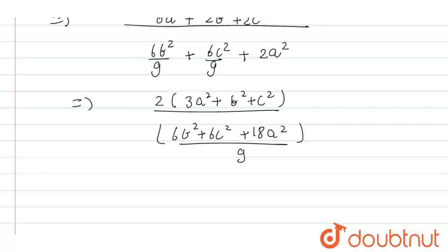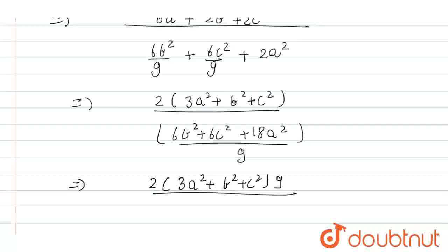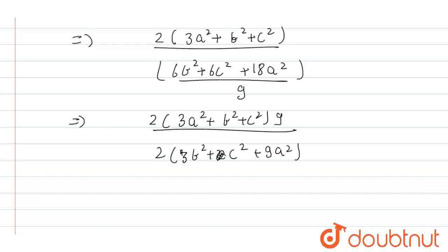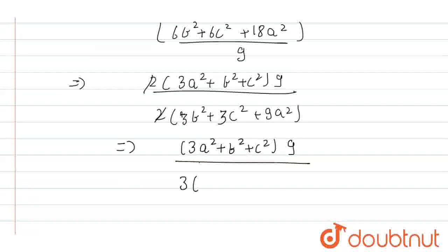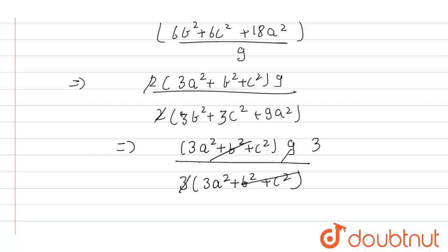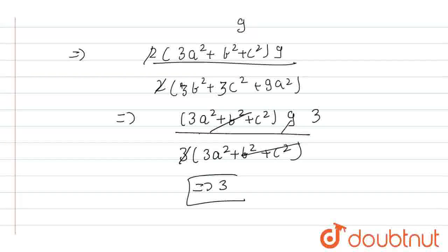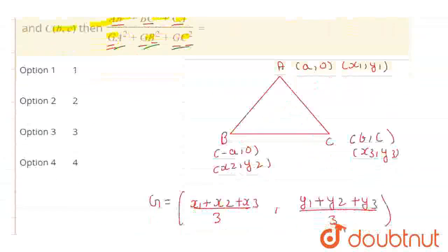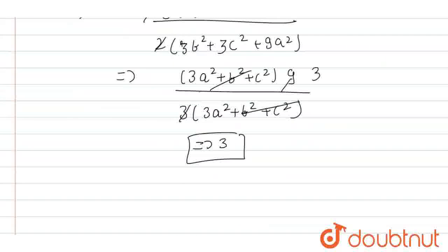Taking 2 common from the numerator gives 2(3a² + b² + c²). In the denominator, we take 3 common to get (6b² + 6c² + 18a²)/9 = 3(2b² + 2c² + 6a²)/9, which simplifies to (2/3)(3a² + b² + c²) after factoring. The (3a² + b² + c²) terms cancel, and we get our final answer as 3. Checking the options, option 3 contains this value, so option 3 is correct.